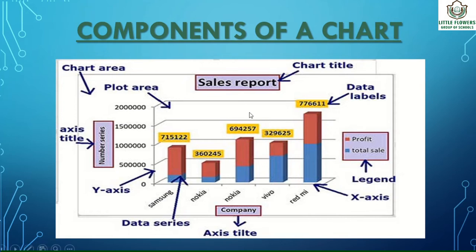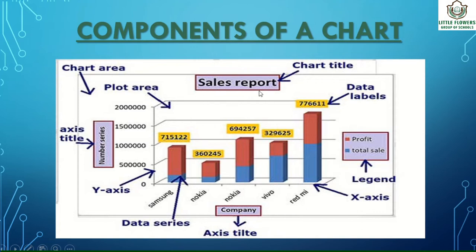Next is the plot area. The plot area is a window within the chart area. It contains the actual chart and includes all the plotted dots, data series, categories, and values. Next is legends — legends depict colors, like profit shown in red or total sales in blue. Different colors, patterns, and symbols are assigned to the data series, and this is called the legend.